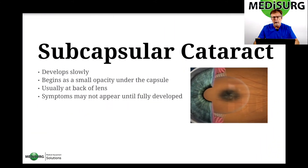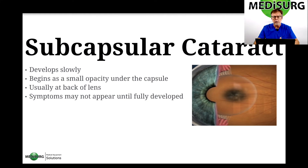Next, we have the subcapsular cataract. This develops very slowly and it's kind of rare, but it does happen. It begins as a very small opacity under the capsule, usually at the very back of the lens. The symptoms may not appear until it's fully developed. Looking at the peanut M&M, it's between the candy-coating shell and the cortex where that surface becomes very irregular.